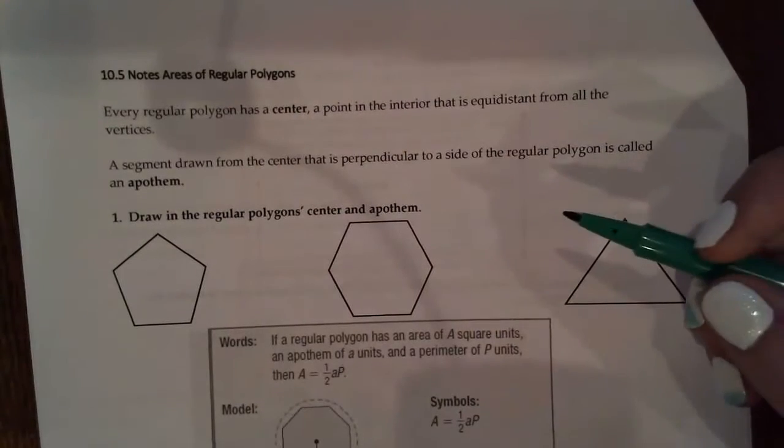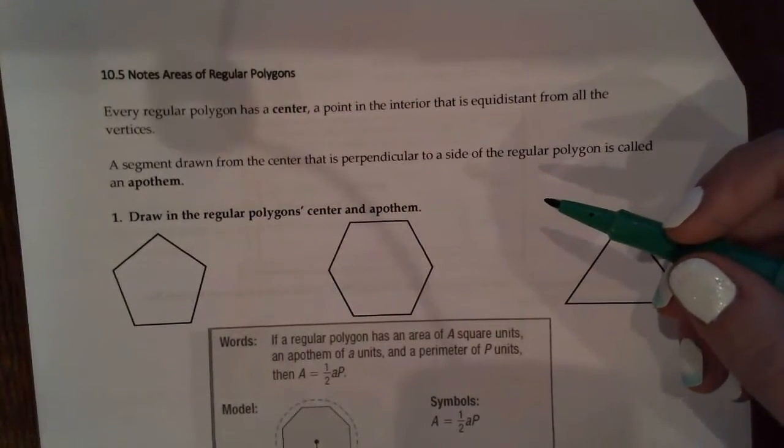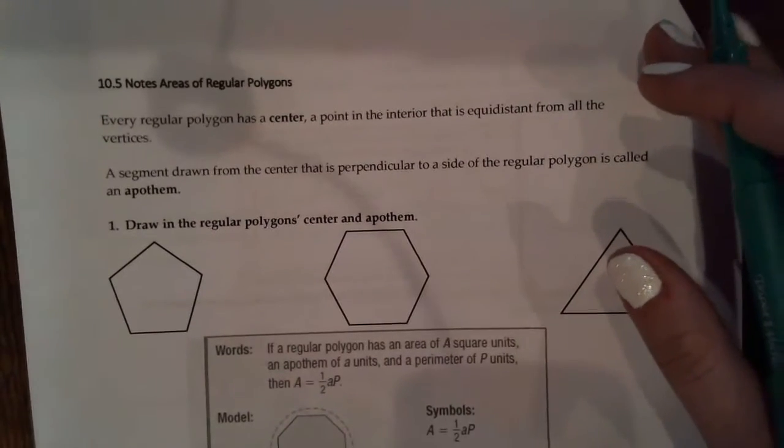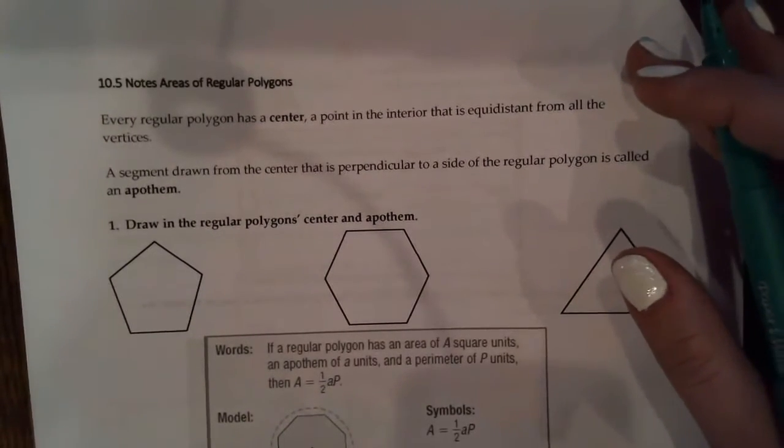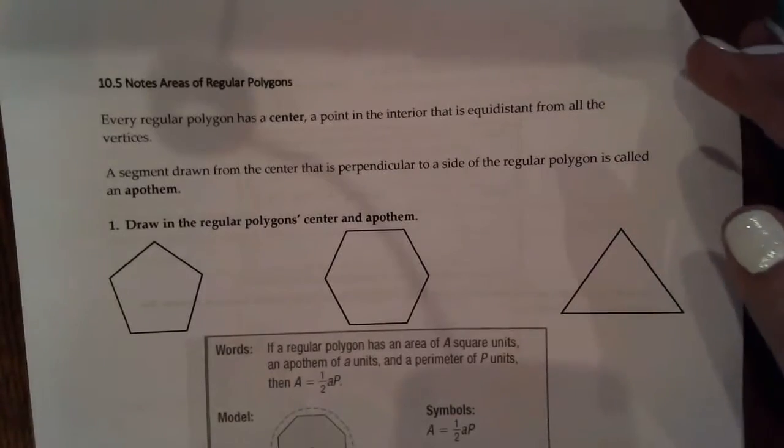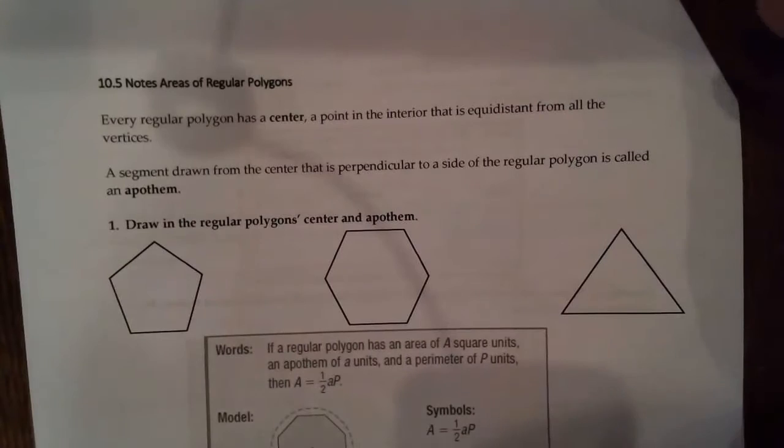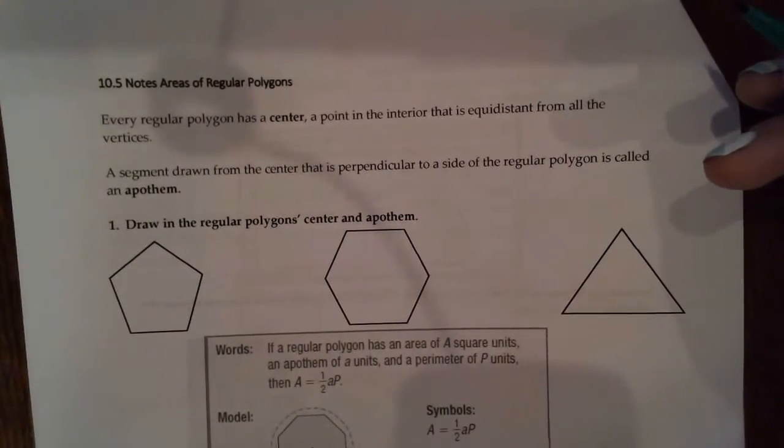We're about to start in 5, 4, 3, 2, 1, here we go. The end of another chapter, Chapter 10.5, areas of regular polygons. Every regular polygon has a center, a point in the interior that is equidistant from all the vertices. A segment drawn from the center that is perpendicular to a side of the regular polygon is called an apothem.